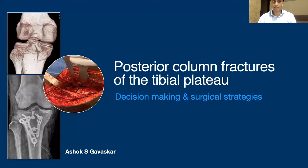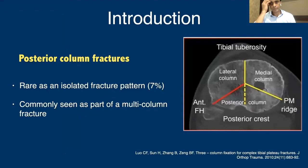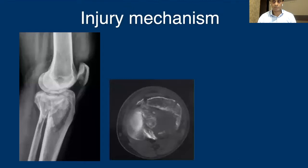Good morning everyone. My talk is on posterior column fractures of the tibial plateau and how to decide and formulate your surgical strategy. When we say posterior column fractures, by definition we are using the three-column classification proposed by Luo Kongfan in 2010. As per that classification, the area shaded in yellow constitutes the posterior column of the tibial plateau. Fractures in this column are quite rare in isolation but can occur very commonly as part of a multi-column injury.